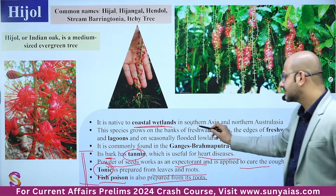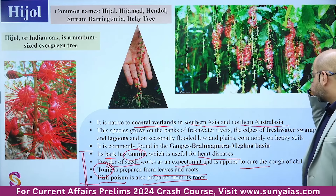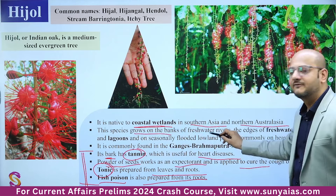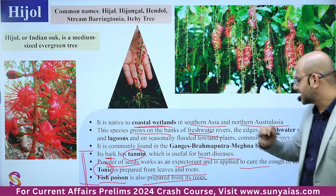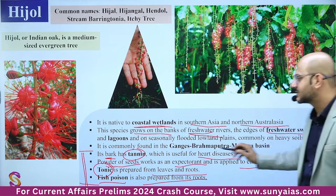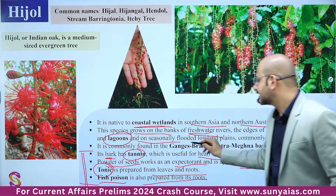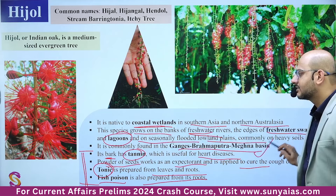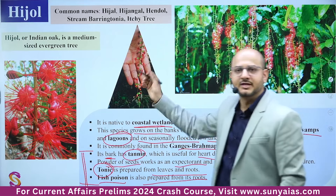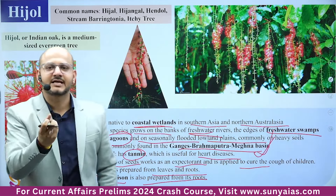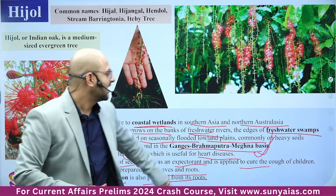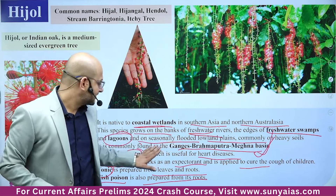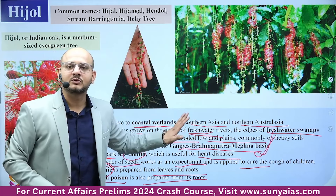Hijol is native to coastal wetlands in Southern Asia and Northern Australia. The species grows on the banks of freshwater rivers — in the Ganges river basin, freshwater swamps, lagoons, and on seasonally flooded lowland plains. It is also found in the Ganges-Brahmaputra-Meghna basin.